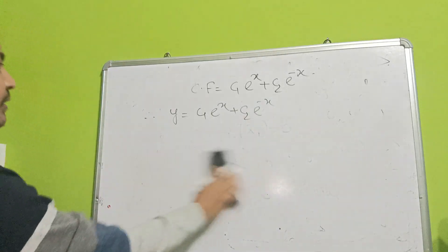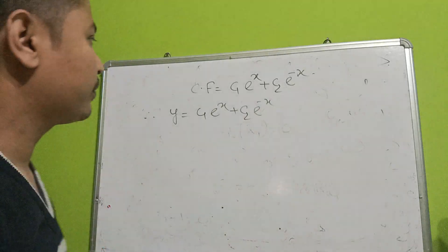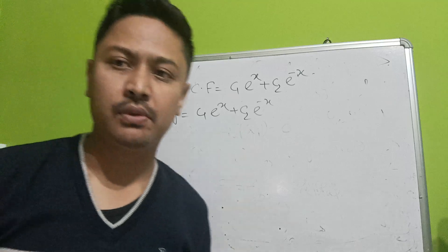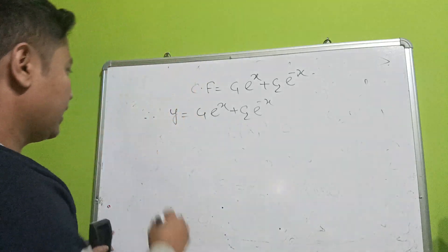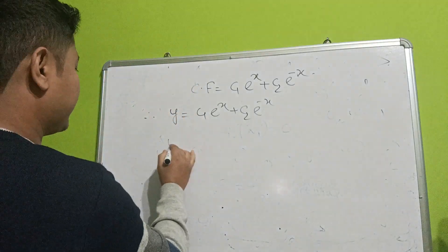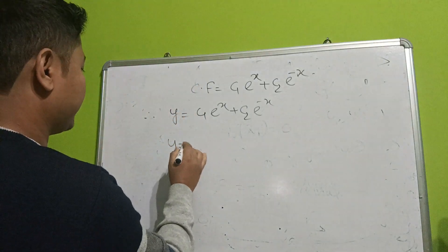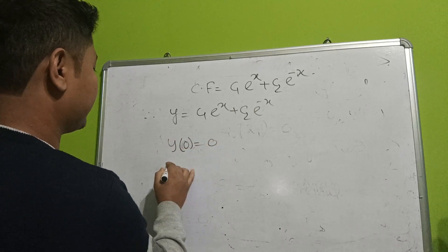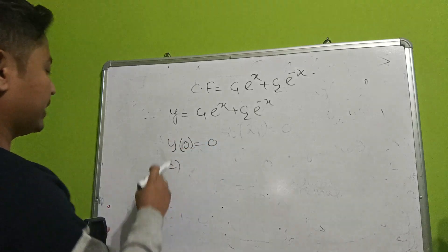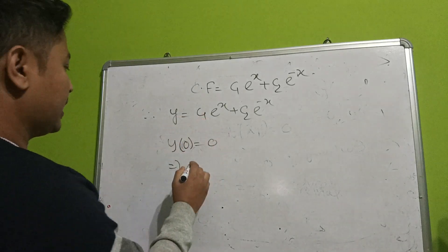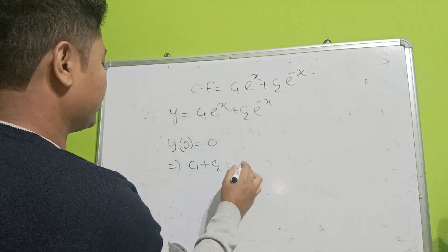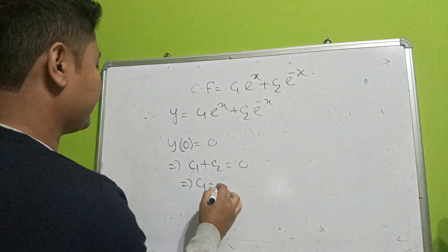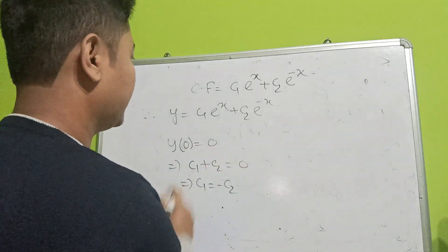Now we apply the boundary conditions to find c1 and c2. Using the first boundary condition y(0) equal to 0: c1 plus c2 equals zero, so c1 equals minus c2.